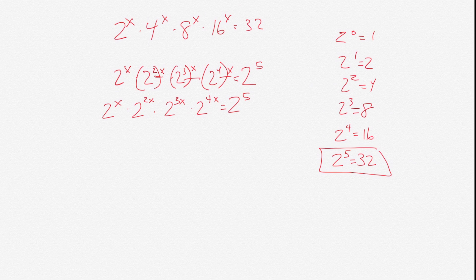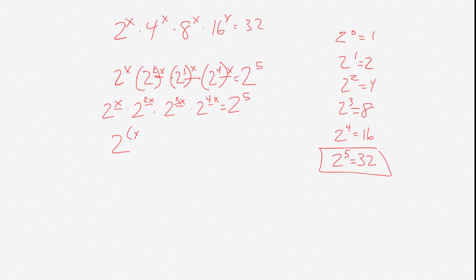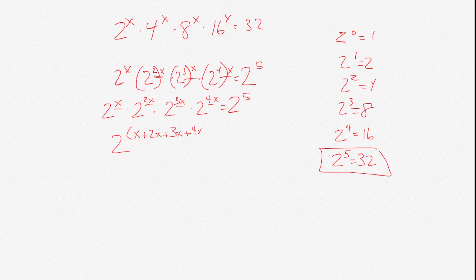Whenever we have the same base multiplied to each other that's raised to different exponents, we could just add all the exponents. So here we can add x plus 2x plus 3x plus 4x. And all of that equals 2 to the 5th.